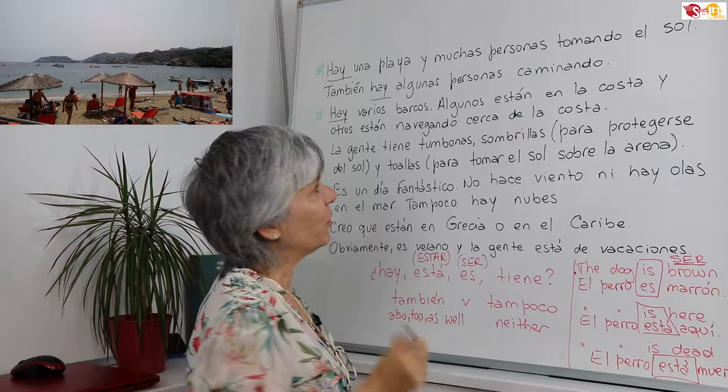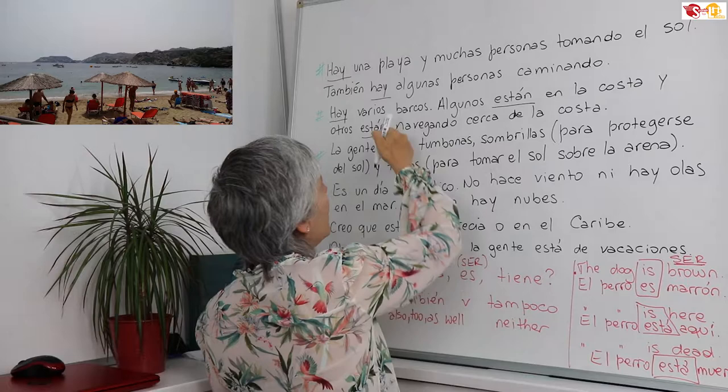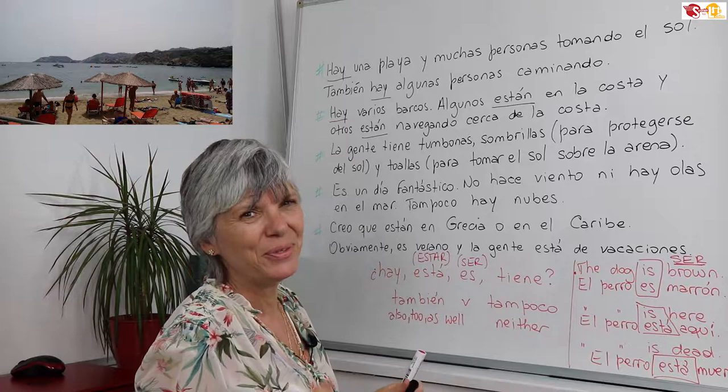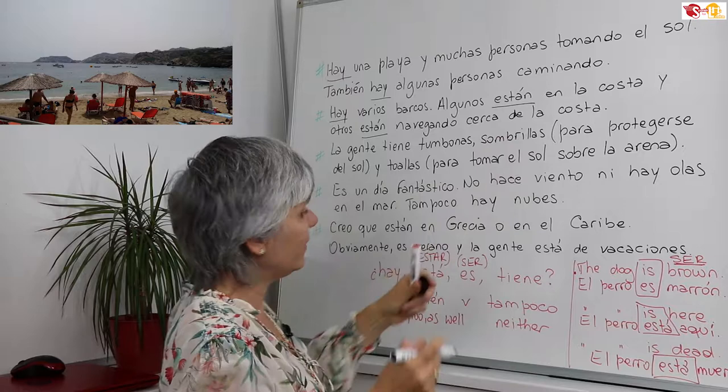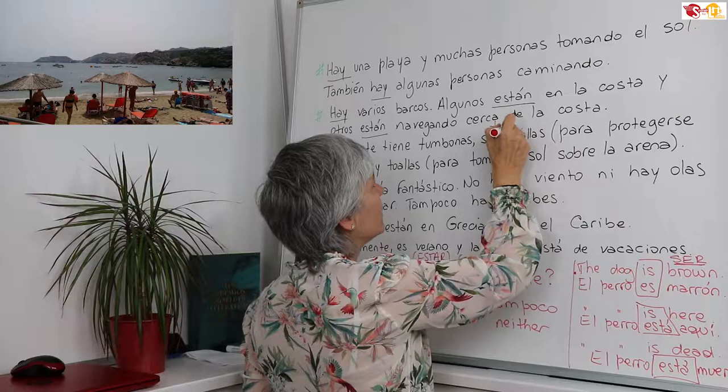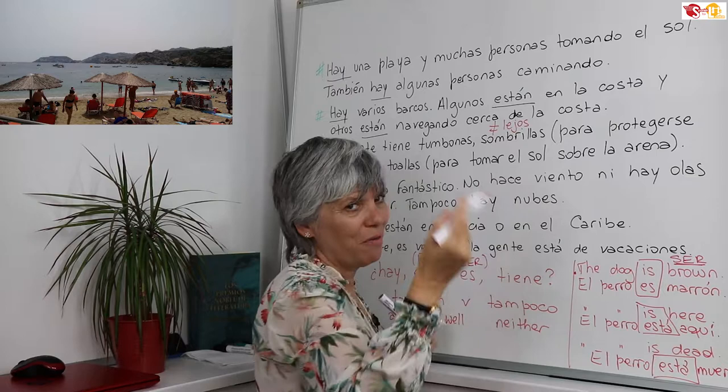Take a look — I put están, because the boats are located in a particular place, so for location I use estar. Some of them are on the shore and some others are sailing near the shore. Remember, cerca means 'near,' while lejos is the opposite, meaning 'far.' Cerca — near; lejos — far.